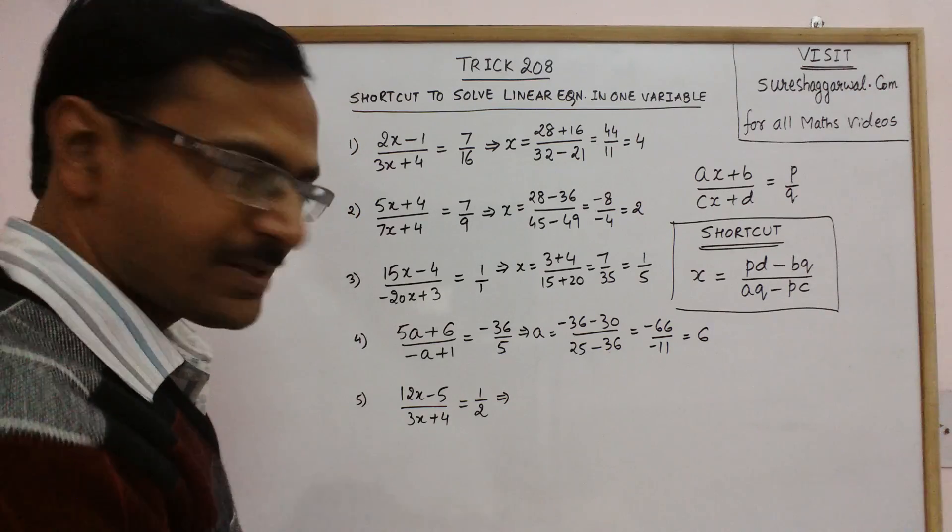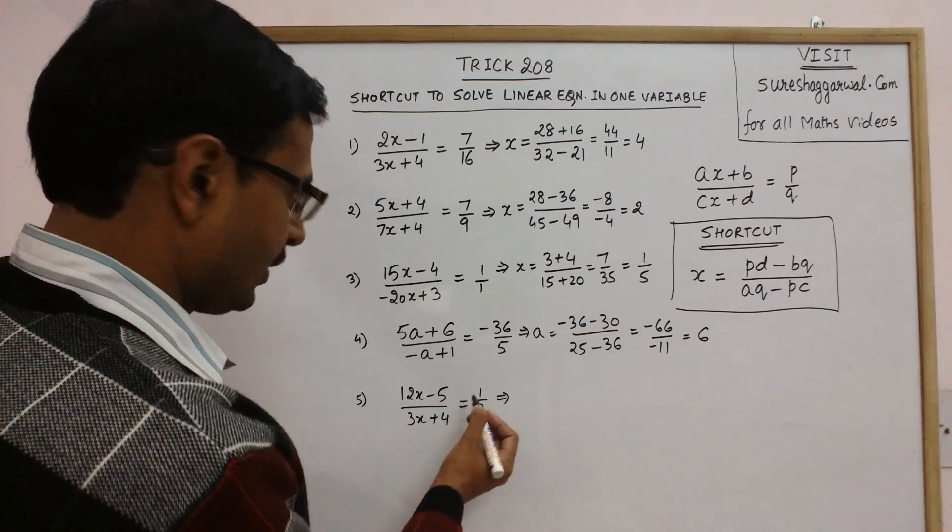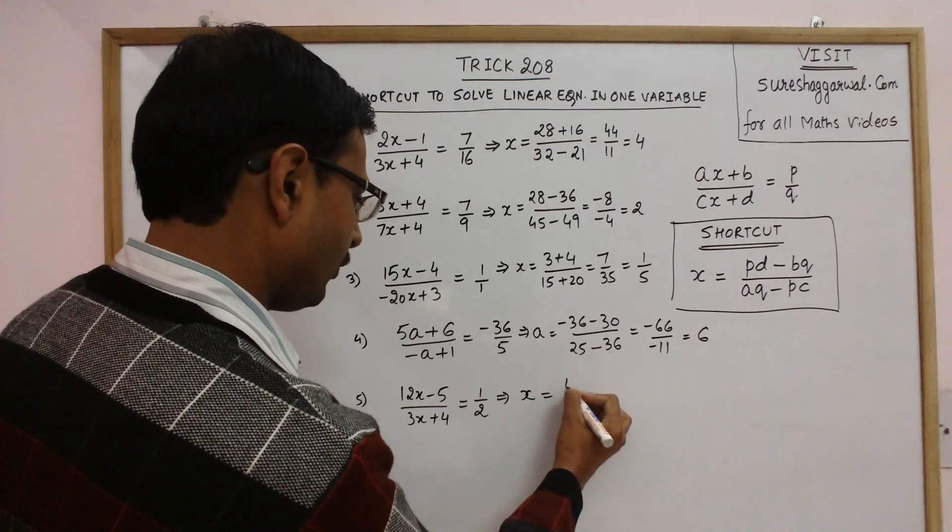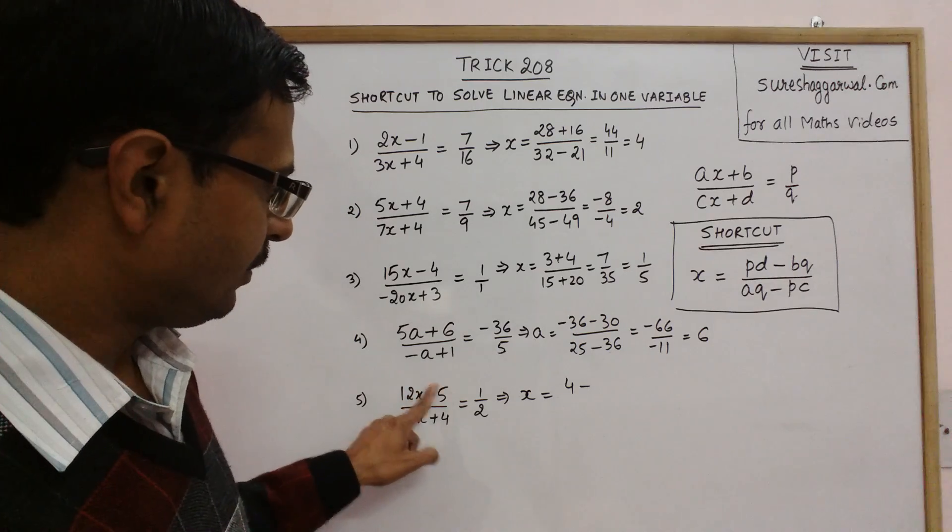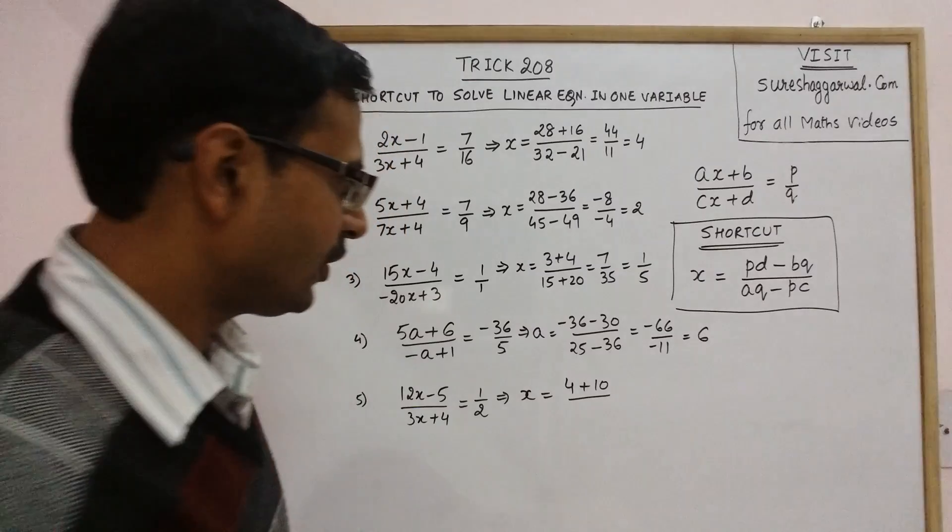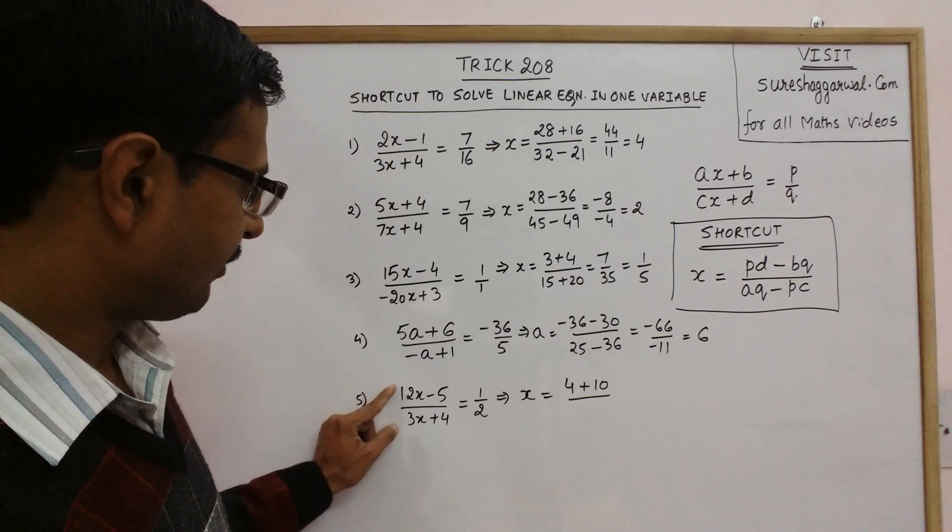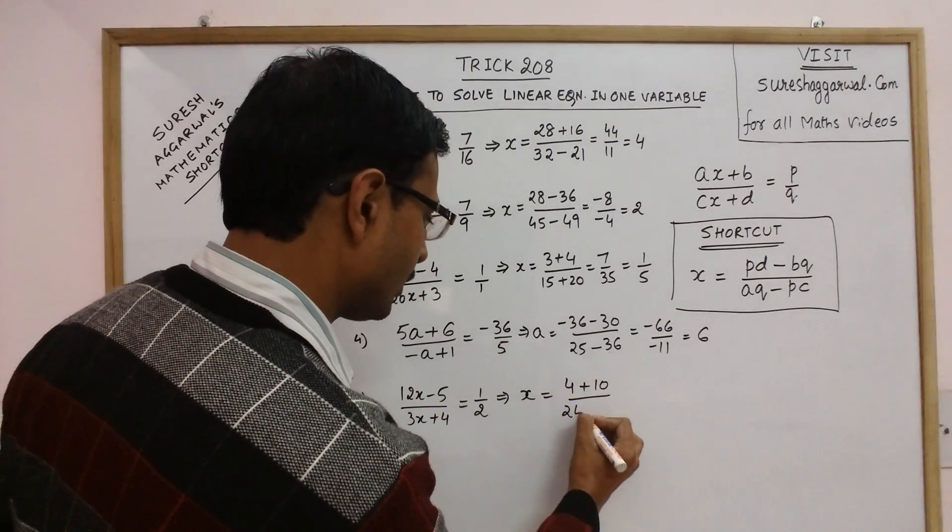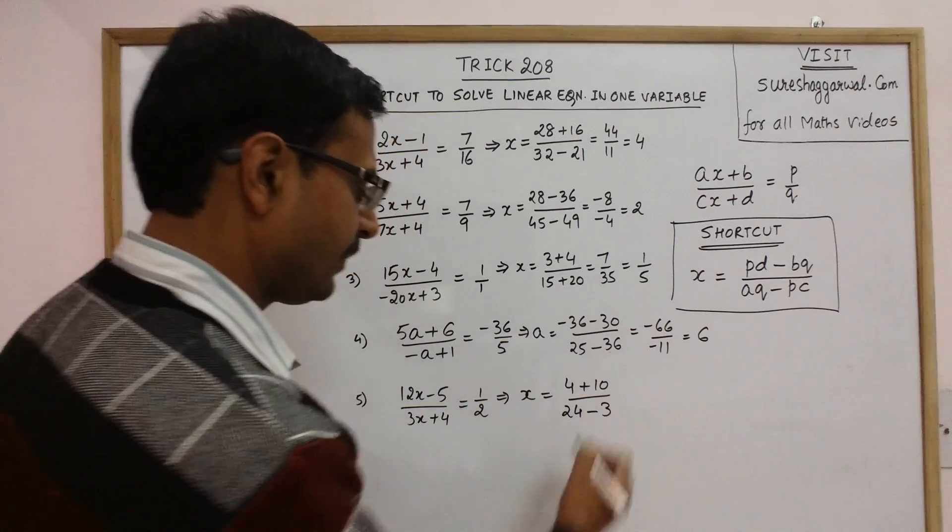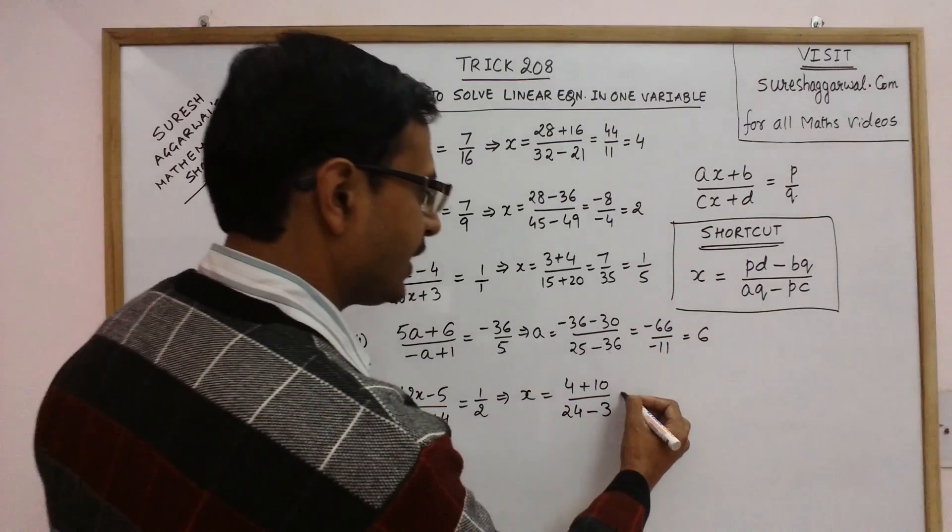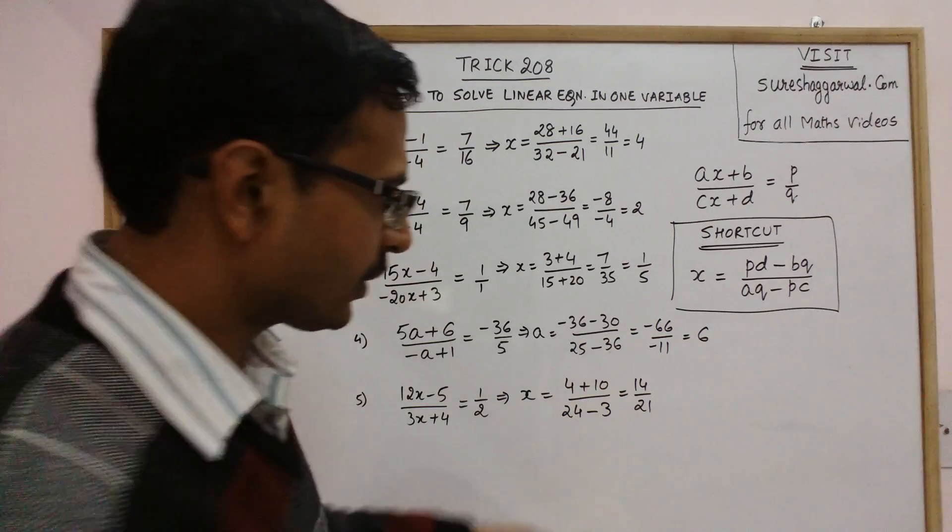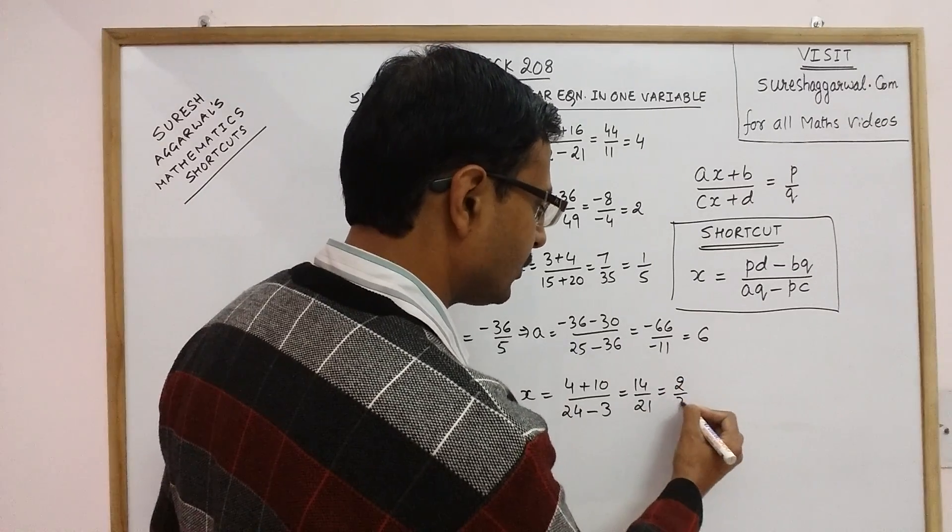Final question. So here we have pd the first term 1 into 4, 4 minus bq minus 10, so it becomes plus 10. So you get the answer as 14 upon 21 which 7 is a common factor here. You can cut off the common factor. You get 2 upon 3.